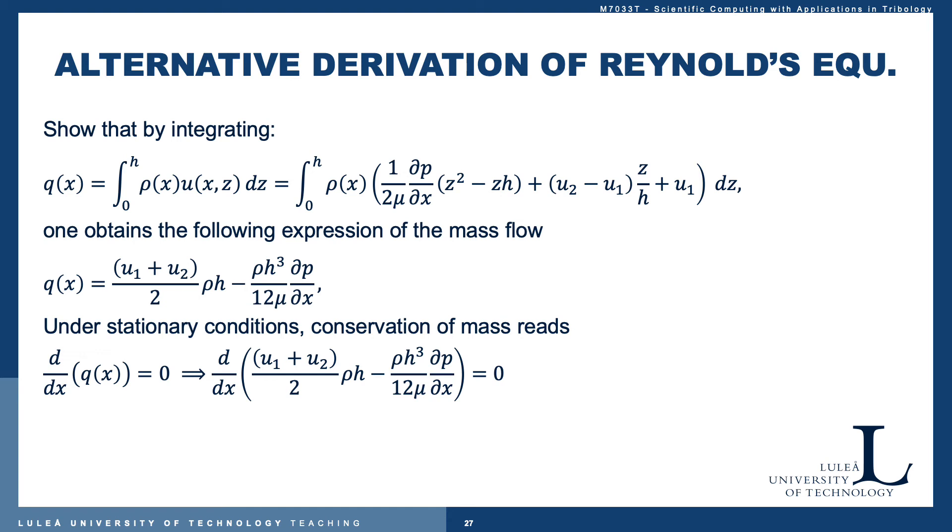Now you have an exercise to do. I want you to show that by integrating ρu, the product ρ times u from zero to the height of the gap h, you will obtain the following expression for the mass flow. It's just a recap of quite easy integration. Then when you have that, you can formulate the Reynolds equation by taking the derivative of the mass flow and posing that this must be zero. We have a constant mass flow at every position x. This will give you the Reynolds equation as we can see here explicitly formulated. This is the Reynolds equation in 1D governing steady flow.